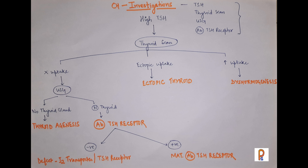To investigate a child with congenital hypothyroidism: if TSH is high, proceed with a thyroid scan. If there is no uptake, ectopic uptake, or increased uptake on the scan — ectopic uptake confirms ectopic thyroid; increased uptake suggests dyshormogenesis. If there is no uptake, proceed to ultrasonography. If no thyroid gland is visible on ultrasound, that confirms thyroid agenesis. If the thyroid appears normal but uptake is absent, this suggests TSH receptor blocking antibodies, so test for antibodies against the TSH receptor. If antibodies are positive, maternal TSH receptor antibodies are confirmed.